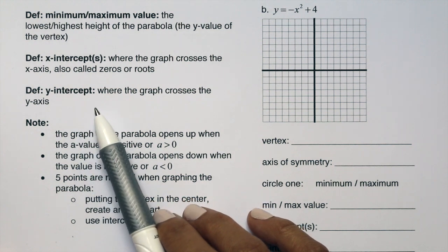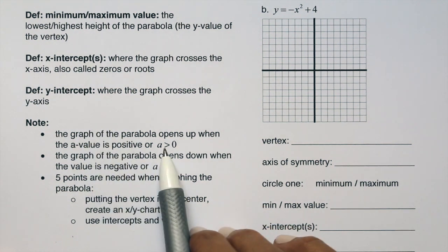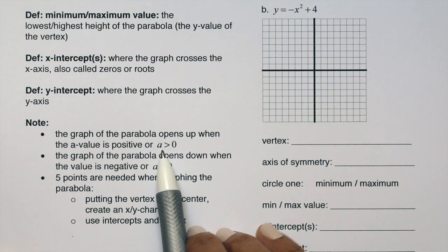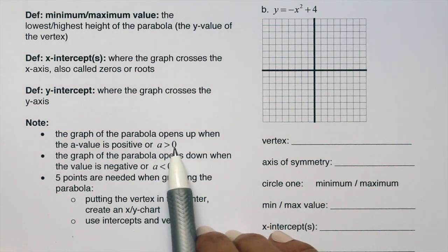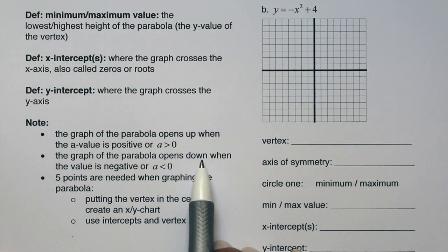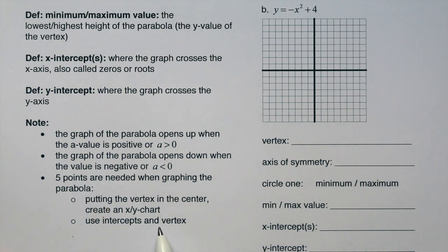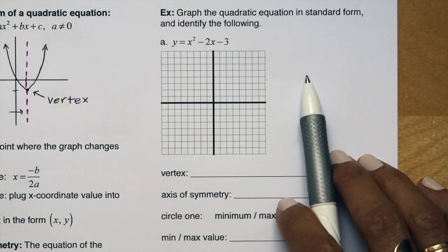We'll identify the value of a, which is the coefficient in front of the x-squared term. If a is positive, the graph opens up. If a is negative, the graph opens down. For graphing, we want 5 points on our parabola, and we'll talk about how to find those in the next examples.